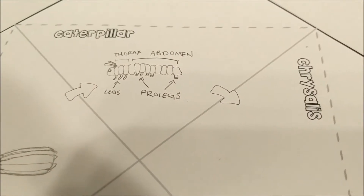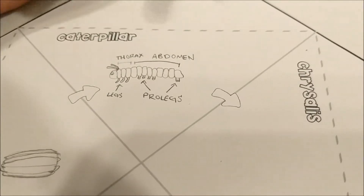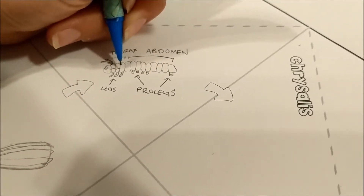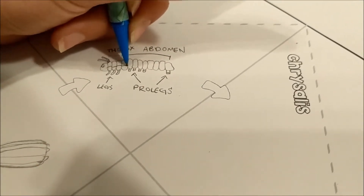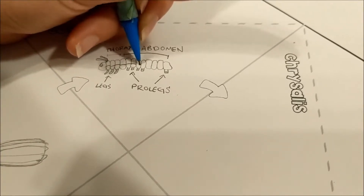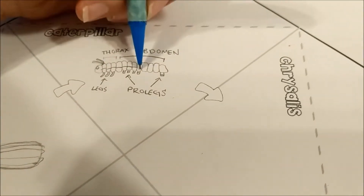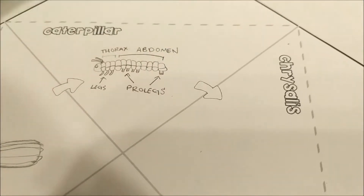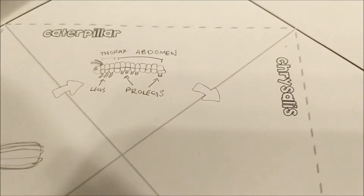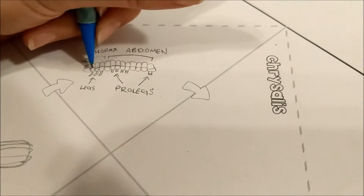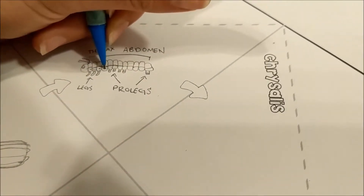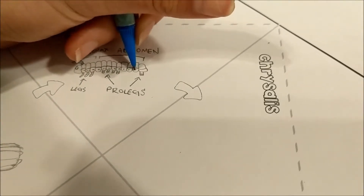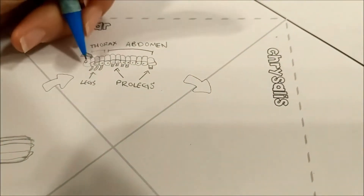To make the caterpillar look more 3D and give it dimension, I'm drawing a little line in each of the body segments to look like you can see the underside of the caterpillar. Then I'm adding a little dot or circle in each segment — these are air holes so that the caterpillar can breathe, and they're called spiracles.